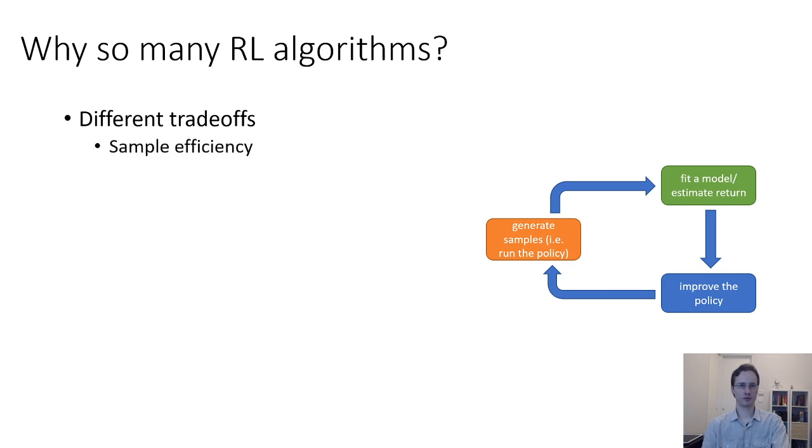So one important trade-off between different algorithms, and we'll touch on this as we go through the next few lectures, is sample efficiency, meaning when you execute the stuff in this orange box, when you generate samples in the environment, how many samples will you need before you can get a good policy?